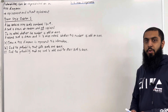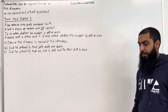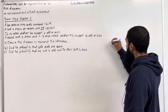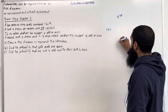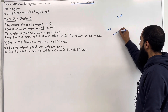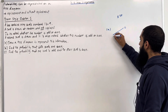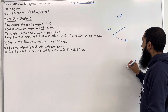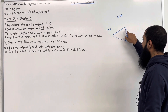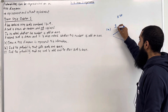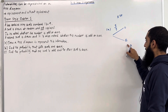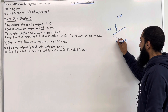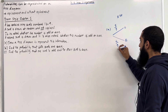Let's have a look at the solution to Part A. For the first pick, I can get odd or I can get even. The probability of picking an odd number from 1 to 9 is 5 out of 9. The probability of picking an even number from 1 to 9 is 4 out of 9.